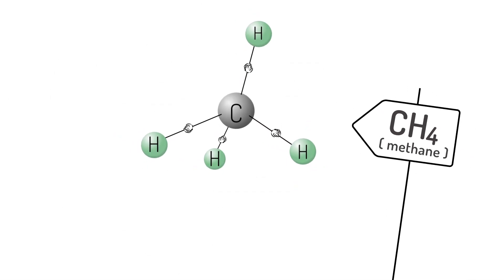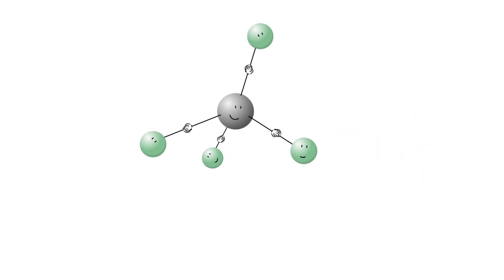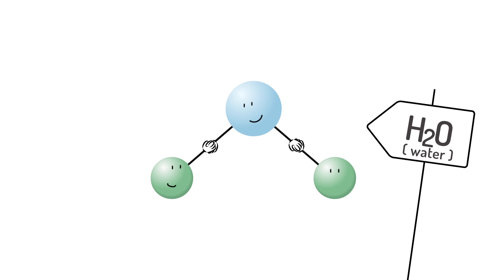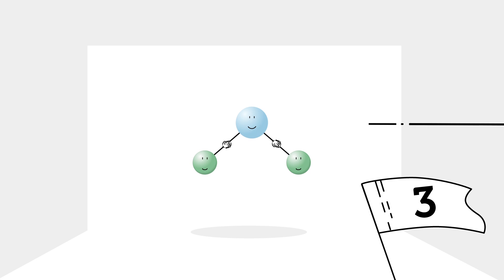The more atoms and bonds a molecule has, the more vibrational modes. For example, a water molecule has three atoms, one oxygen and two hydrogens, and two bonds. That gives it three modes of vibration: symmetric stretching, asymmetric stretching, and bending.